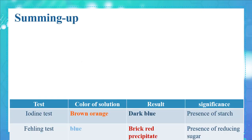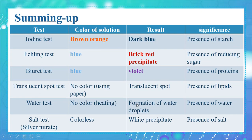Let's sum it up. In the iodine test, the initial color of the solution is brown-orange; it will turn into dark blue, indicating the presence of starch. In the Fehling test, the initial color is blue; after heating, there will be formation of a brick-red precipitate, indicating the presence of reducing sugar. In the biuret test, the initial color is blue; it will turn into violet, indicating the presence of proteins.